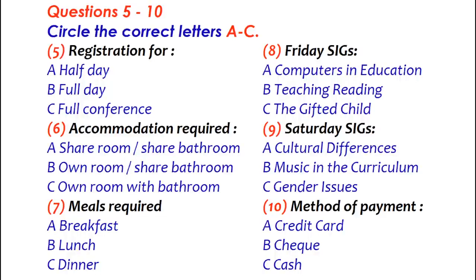Will you be requiring accommodation while you're here in Melbourne? Yes, I suppose I will. What's available? Well, we have several levels of accommodation. You can share a room with another student for $25 a night. Or you can have your own room but share the bathroom — that's $45. Or you can have a single room with your own bathroom. I don't mind sharing a room. On second thoughts, yes, I do. I'll have my own room, but I'll share the bathroom.